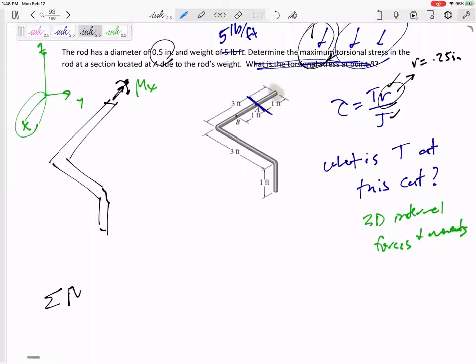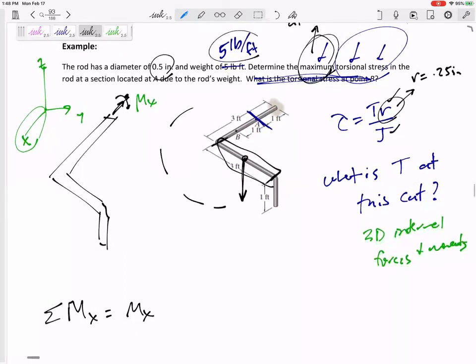X, Y, Z. So I need to find MX. I need to find MX. So how can I sum my moments in the X direction? I need to find this MX. Do you see that the weight of this section right here, pointed straight down, will create a moment in the X direction? What is its weight? Let's just think logically real quick.